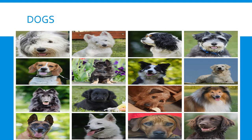Ctrl+I will bring up the highlight option during your presentation. Since we have many dogs here and you know each one's name, we may highlight any one of them to show exactly which one we are talking about. For example, we can highlight this beautiful black dog or highlight the white one. To erase the highlight, tap Ctrl+E and it will erase the highlight on the pictures, bringing the pointer back.